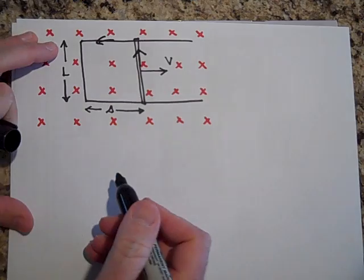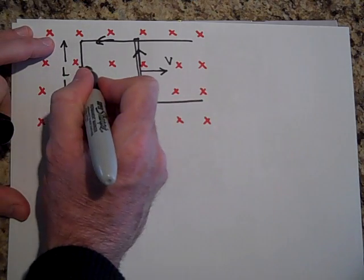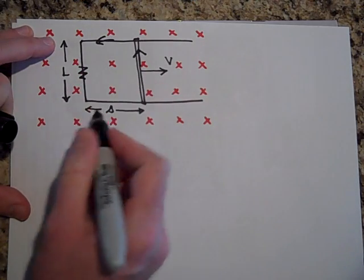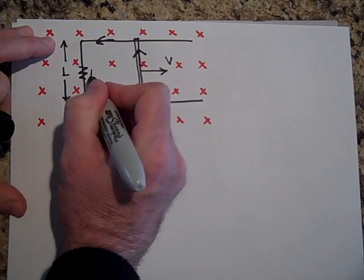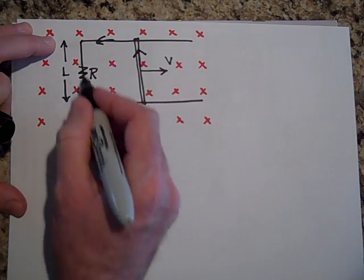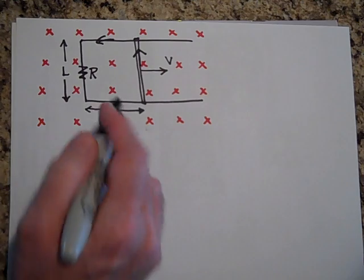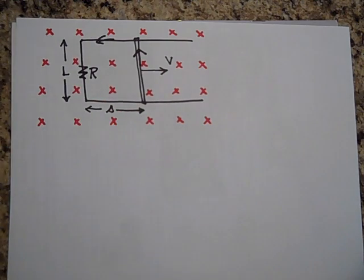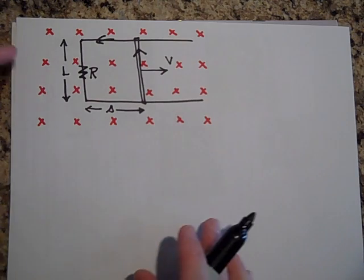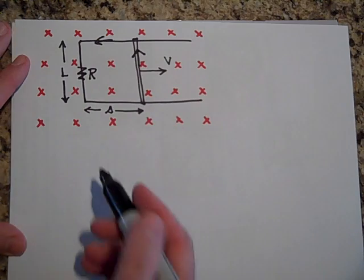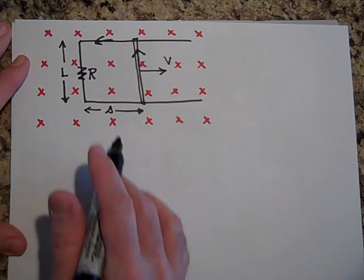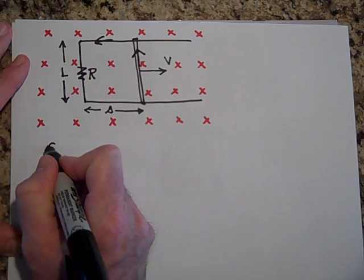There's some resistance in the circuit — it may be a single resistor R or the whole loop has a certain resistance. Let's just call it R. Now there are a whole set of questions that get asked about this setup, so let me show you how to find the induced EMF.